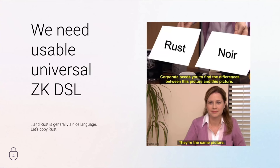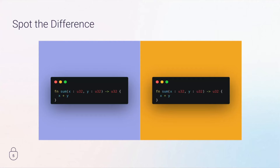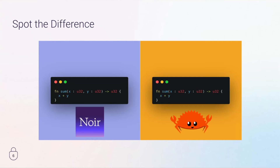So we just went and copied the syntax from Rust. If you try to find the difference between the two programs, you're usually going to have a very bad time. If you try to spot the difference between two snippets, you're not going to find them. One of them is Rust, the other one is Noir. As you can see, there are little differences — in this case, there are zero differences.